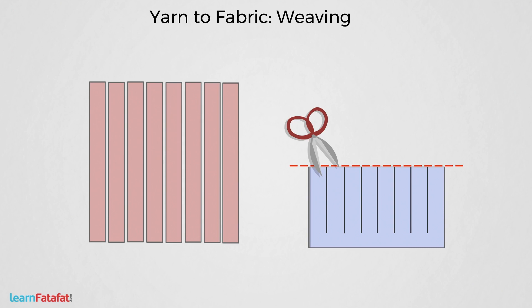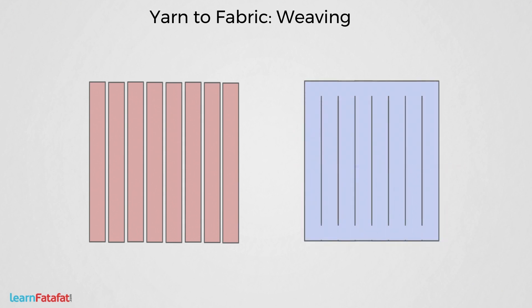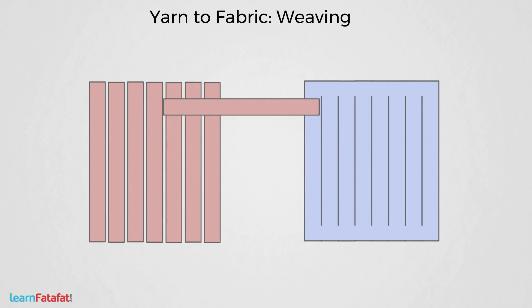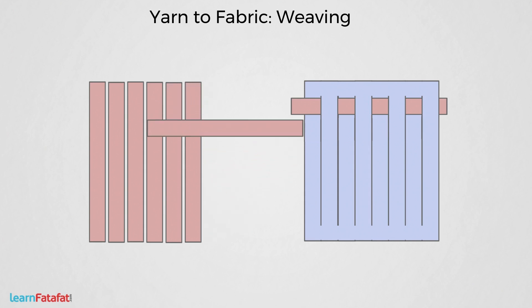Now unfold the paper and you will see the paper with cuts in it. Now take a strip of red paper and put it inside the paper such that it is under the first blue strip and over the next. Now take the second red strip and weave it such that it is under the first blue strip and over the next.